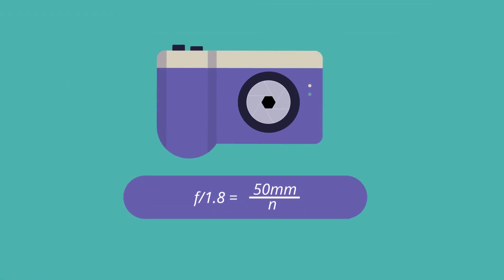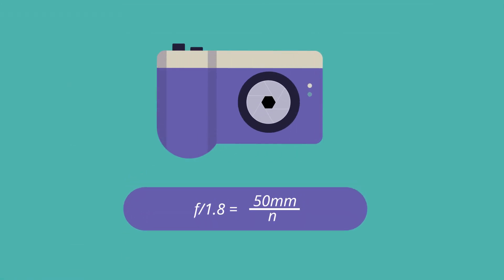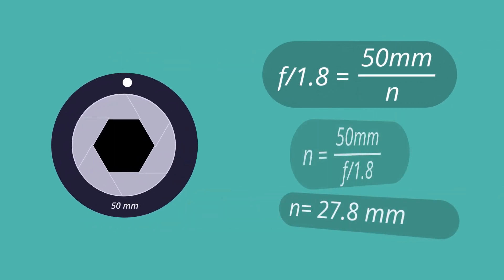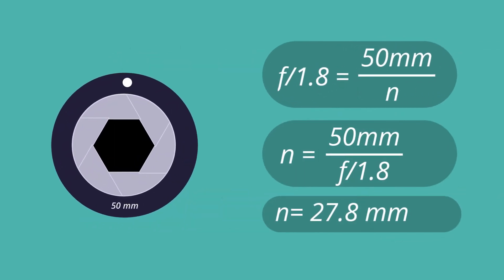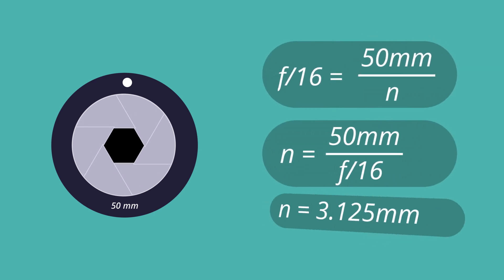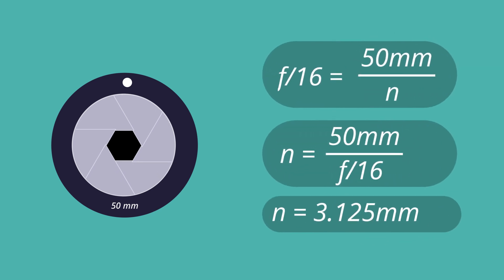Suppose you have a 50mm lens and you set your aperture to f/1.8. If you calculate the aperture diameter, you'll arrive at 27.8mm. Now, if we set your aperture setting to f/16, the new aperture diameter becomes 3.1mm, which is a much smaller number.